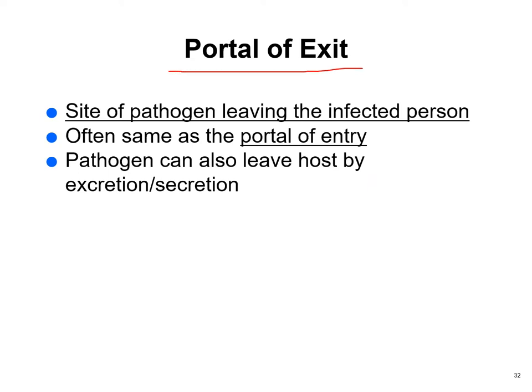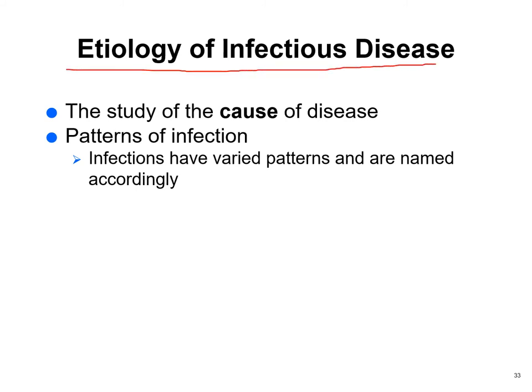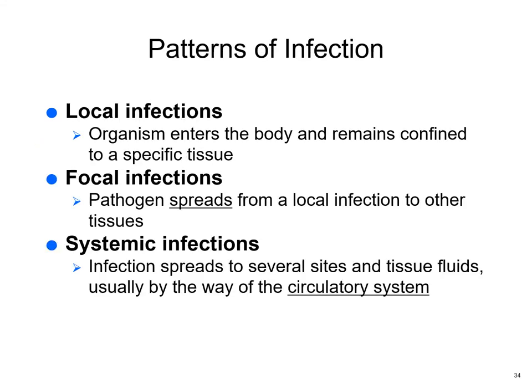The portal of exit: how does a pathogen leave the person to infect someone else? They usually leave the same way they came in — a nose infected by breathing in will infect others by breathing out. Regarding etiology — what caused the disease — we look at patterns of infection. Infections can be local (organism stays in a specific area), focal (beginning to spread), or systemic (entering the circulatory system and spreading everywhere).